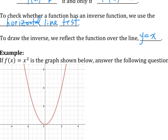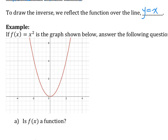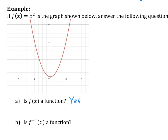For example, x squared - this is the graph shown here. We're going to answer a few questions. First, is f of x a function? Yes, because it passes the vertical line test. Second question: is the inverse of this function a function? Remember, to check we use the horizontal line test. Is this going to pass the horizontal line test - is it going to go through more than one point? Yes. So that's not a function. The inverse is not going to be a function, and we already know that before we figure out how it looks.